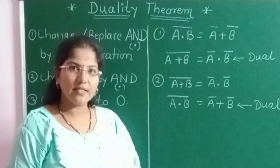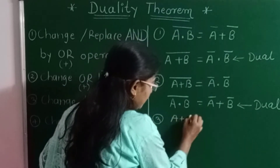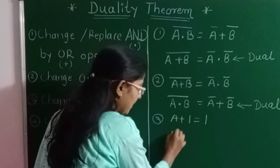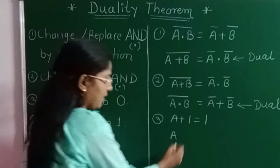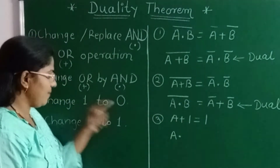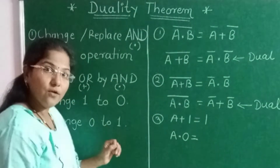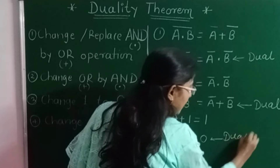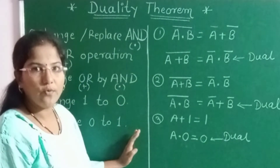Now consider some more examples. Suppose the third expression is A + 1 = 1. To find its dual: A is the input variable, write it as it is. Plus is next — replace the plus by dot. Next is 1 — we have to replace 1 by 0. So I write dot 0 on the left side, and on the right side, 1 is there — replace 1 by 0. So the dual of A + 1 = 1 is A · 0 = 0.